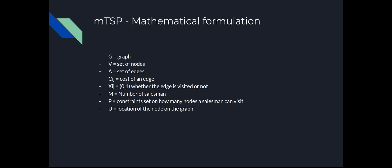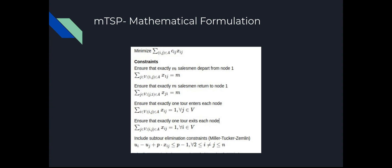To summarize the definitions: G is the graph, V is the set of nodes, A is the set of edges, Cij is the cost, Xij is whether the edge is visited or not, M is the number of salesmen, P is the constraint on how many nodes a salesman can visit, and U is the position of the node in the graph. We must minimize the sum of all edges and their associated costs, ensure exactly M salesmen start and return to node 1, ensure exactly one tour enters and exits each node, and enforce the constraint that each salesman doesn't visit too many nodes.